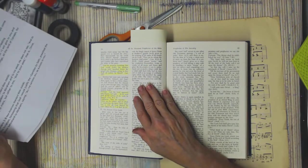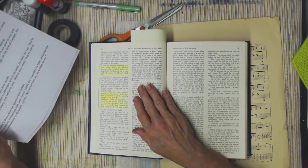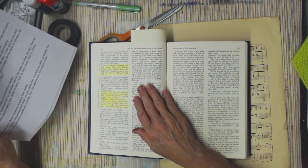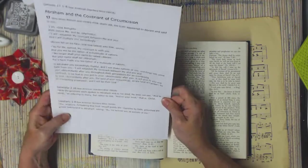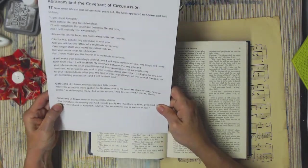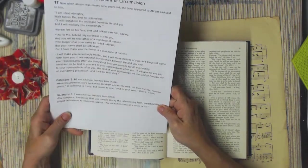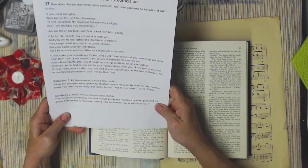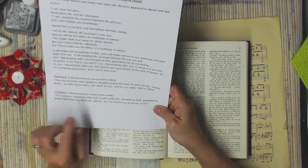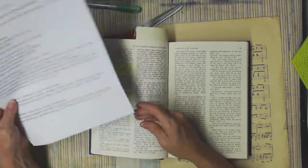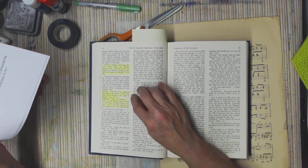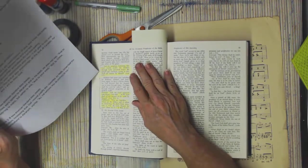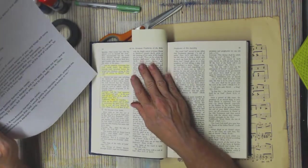And the scripture foreseeing that God would justify the heathen through faith, preached before the gospel to Abraham, saying, In thee, all nations shall be blessed. And that's Galatians 3:8. The scripture foreseeing that God would justify the Gentiles by faith, the heathens in this version, and the Gentiles are the same thing, preached the gospel beforehand to Abraham, saying, All the nations will be blessed in you. And that's God telling Abraham long before Jesus came that this was going to happen.